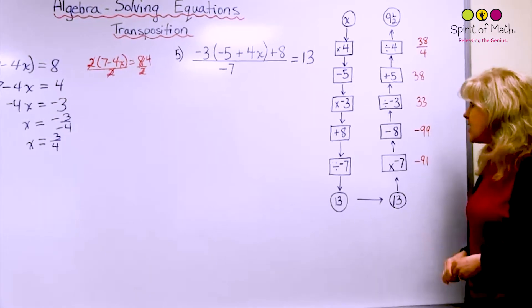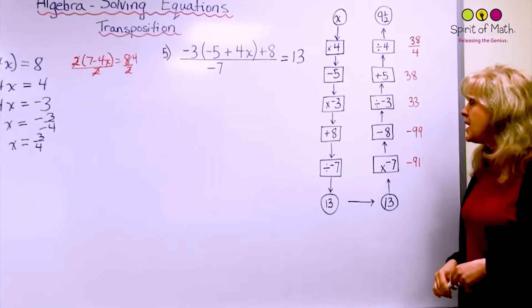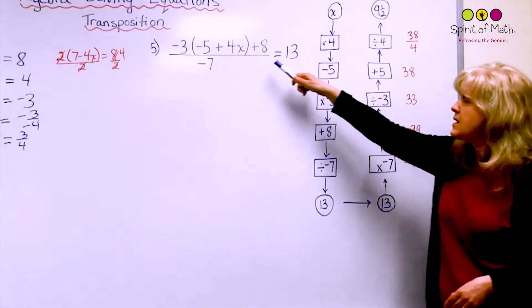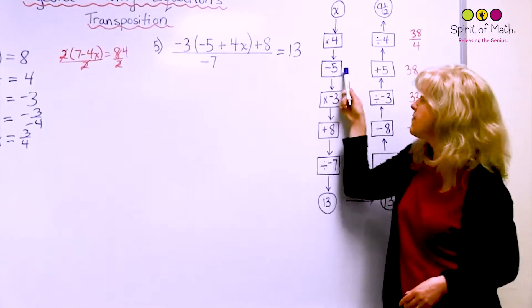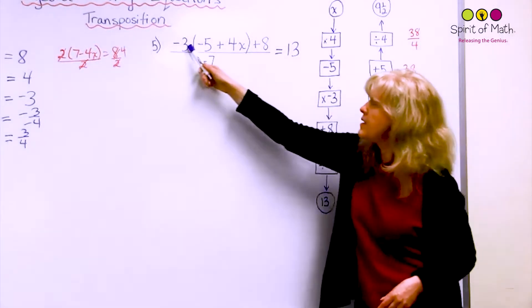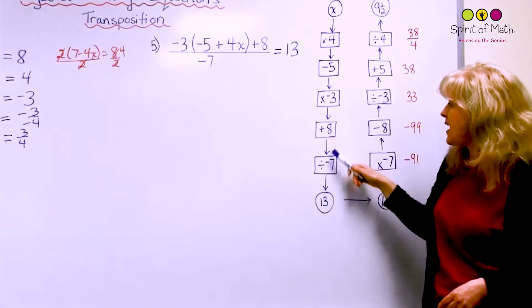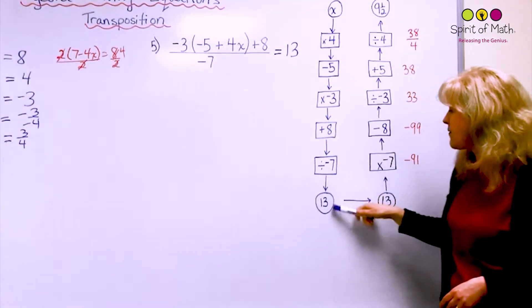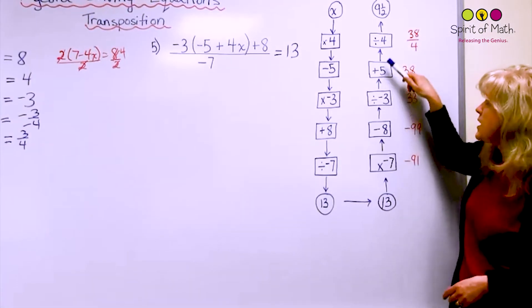So this was example 5 from the last video, and I'm going to be now going through this as transposition. Again, we unfolded it by multiplying by 4, then subtracting 5, and then multiplying by negative 3, and then adding 8, and then divide by negative 7. Then you go backwards with each one of them.